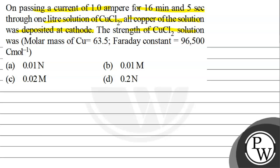The strength of copper chloride solution was option A 0.01 normal, option B 0.01 molar, option C 0.02 molar, option D 0.02 normal.